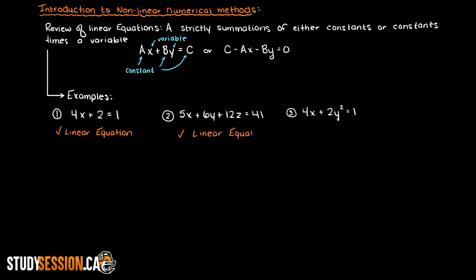However, for equation 3 here, we do have a summation of variables times constants or just variables. However, the last term is a squared variable and this makes this equation non-linear. Any terms that violate our constant times a variable or just a variable rule makes our equation non-linear.